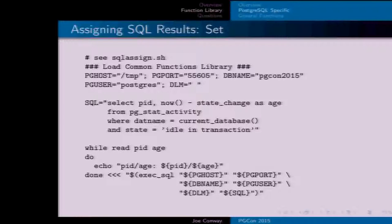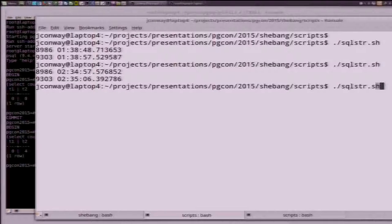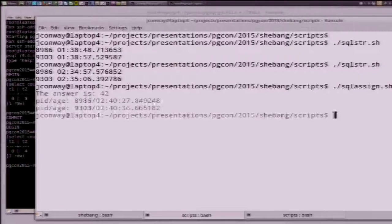If you've got multiple rows and multiple columns, you can use something called a here string — most people have heard of here docs, but a here string is similar. It executes the SQL and assigns results to multiple variables inside a while-read loop, so you can iterate over rows and columns and interact with those variables.